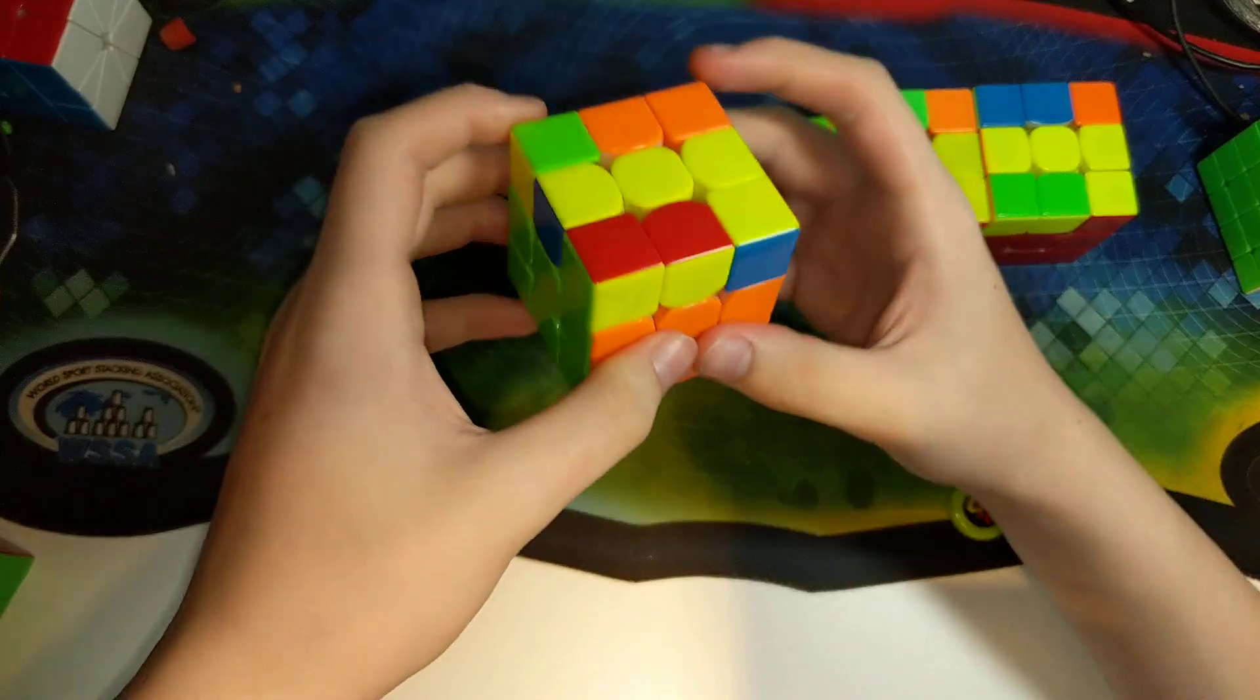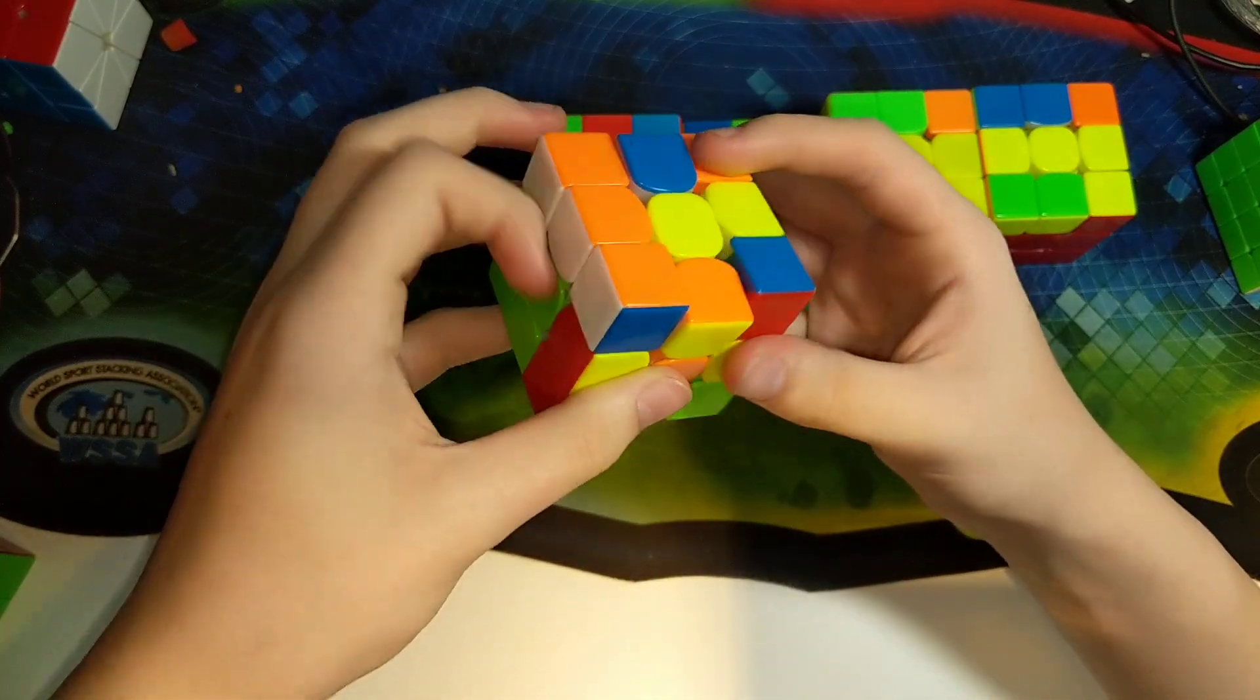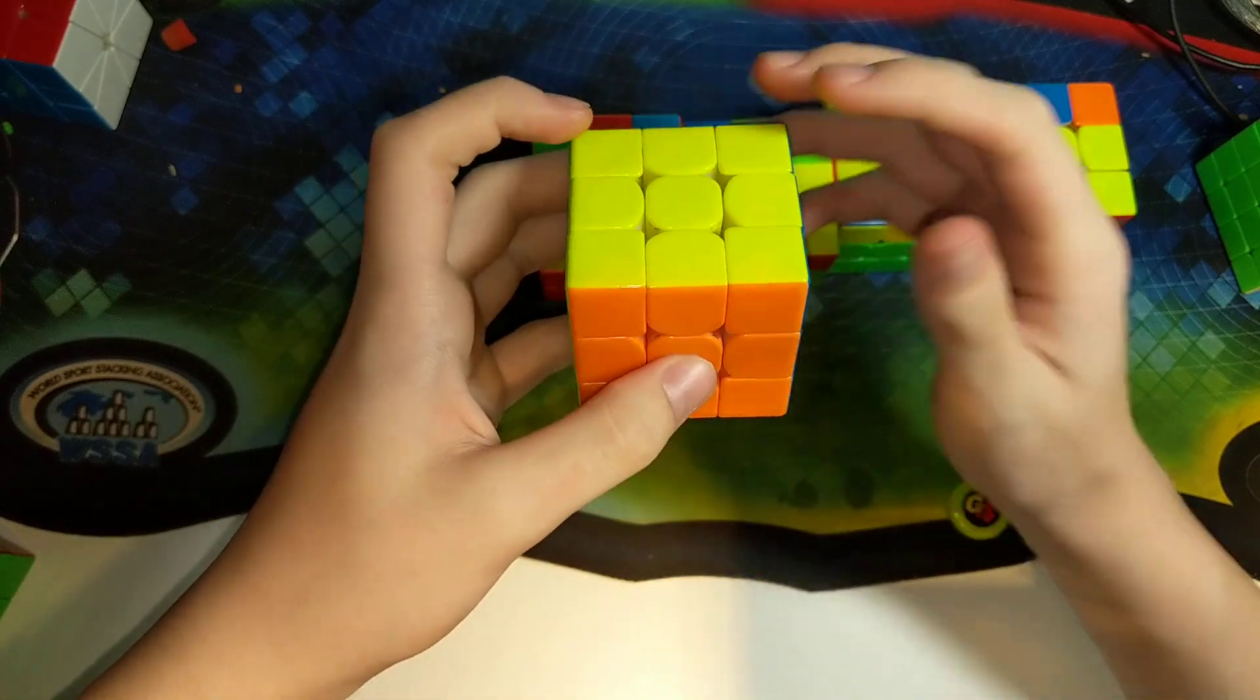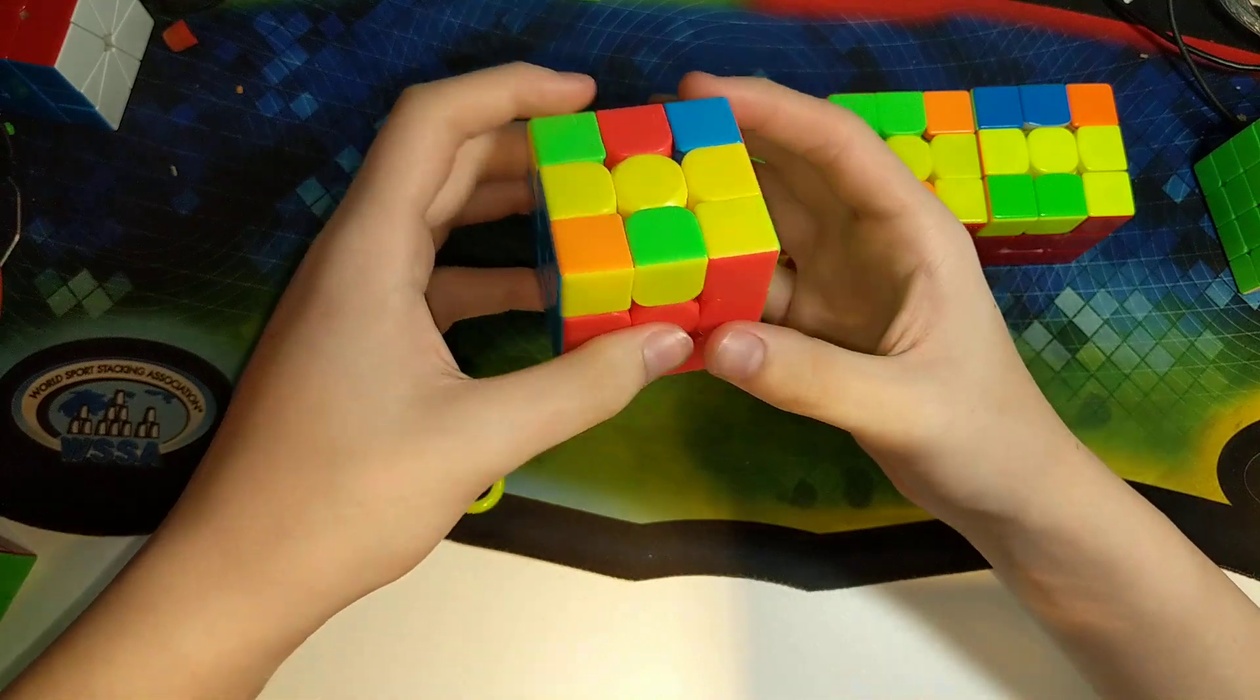This is the Diag-sume case. It is F'RU2R'U2R'F2R60F'. This is the Nicholas CP case.